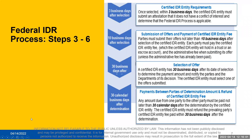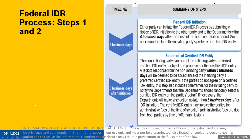Now let's take a look at the federal IDR process after the open negotiation period. The federal IDR process may be initiated within four days after the last day of the open negotiation period if parties do not reach an agreement on an out-of-network rate. The departments will open the federal IDR portal this week and make available the online web form to initiate IDR. If your initiation period ended prior to the IDR portal opening, the department will permit submission of a notice of initiation within 15 business days following the opening of the IDR portal.